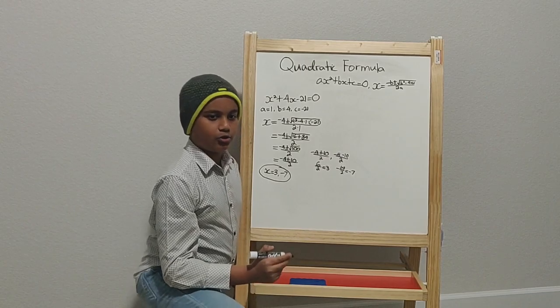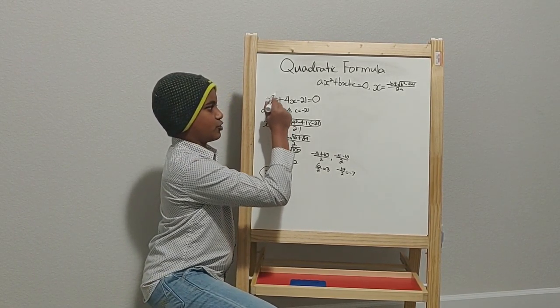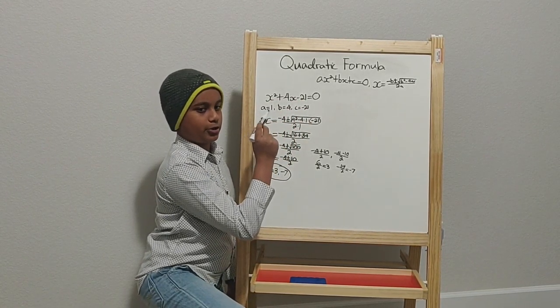If you would like, you can go ahead and substitute these two values of x into this total quadratic equation. If you get zero, then you're correct.